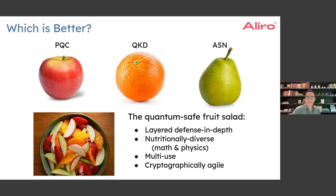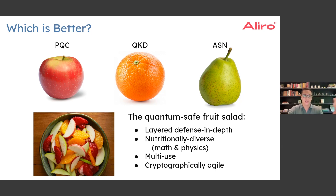So let's make this quantum-safe fruit salad. It gives us a layered defense in depth, where any adversary on the network would have to break multiple protocols and crypto systems in order to gain access to the cryptographic key or decrypt your data. The more crypto systems you have layered together, the more attacks you can mitigate. This fruit salad is nutritionally diverse — the notions of security rely not only on math, but also on physics.